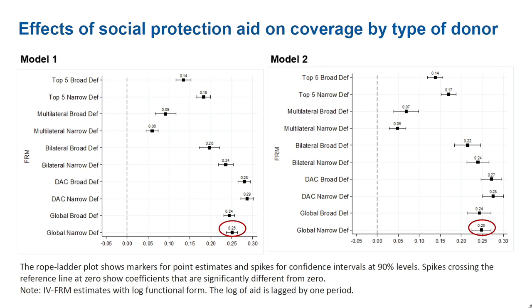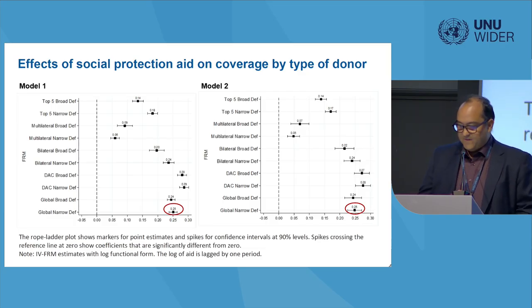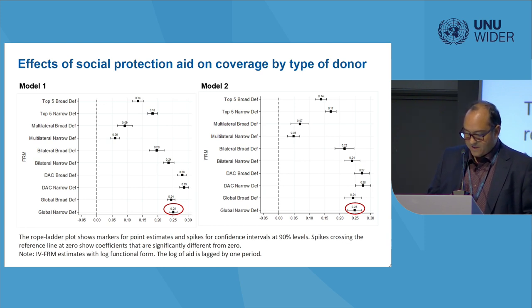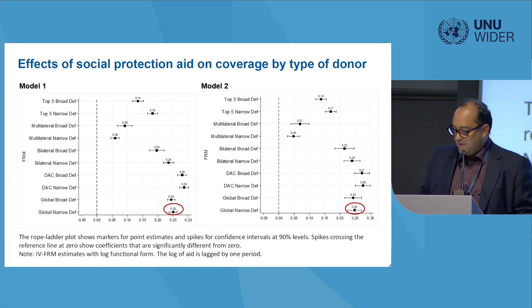One of the interesting things we find is that, across the board, we implemented several models trying to control for multiple factors to reduce the problem of omitted variable bias. After controlling for the endogeneity of aid, we find a very strong association in the contribution of foreign aid to the expansion of social protection across low- and middle-income countries. The effect is about — these are elasticities based on the fractional response models — a 1% increase in foreign aid leads to an increase of 0.25% in coverage, which in many contexts is not negligible.